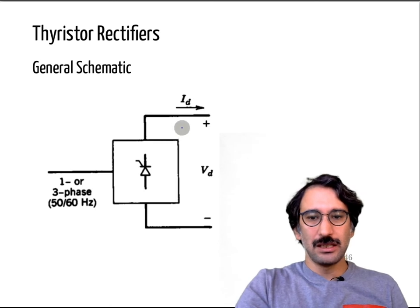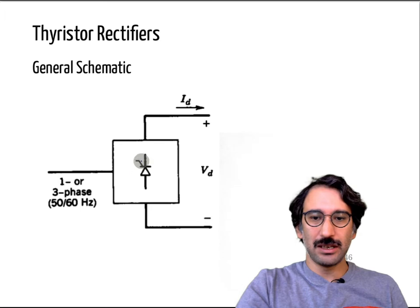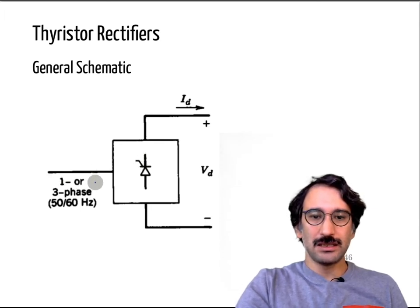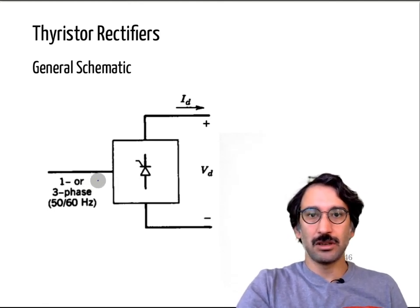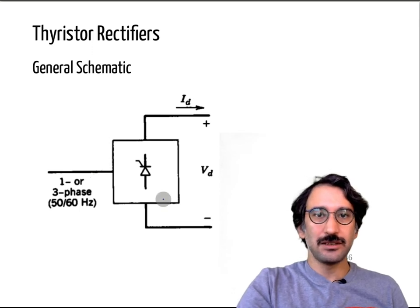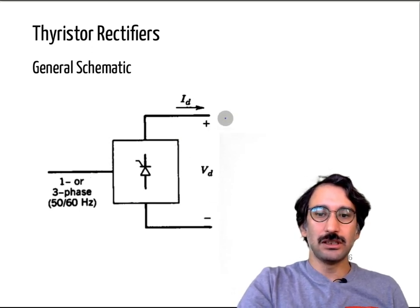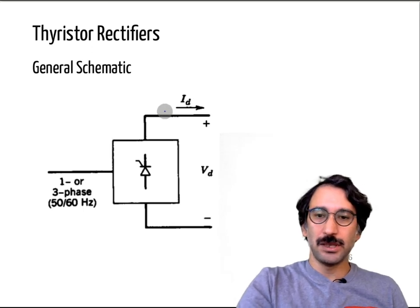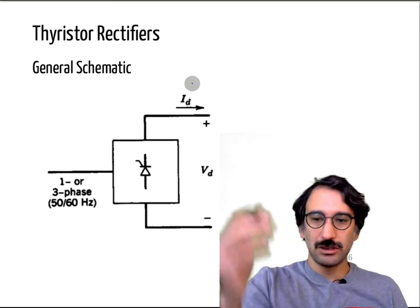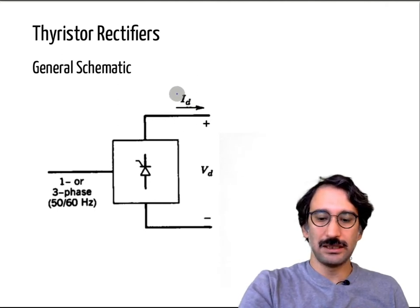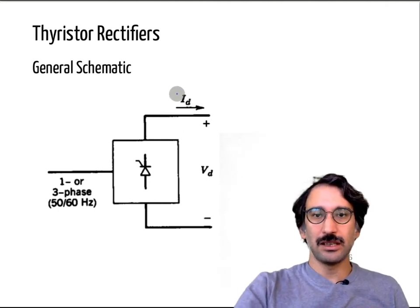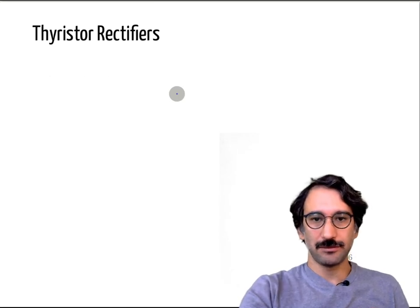The general schematic is like a diode rectifier, but instead of a diode we have a thyristor controlled by a gate signal. The input can be single-phase or three-phase or more. Today we will focus on single-phase thyristor rectifiers. The output is a DC voltage, though depending on the load, the voltage can vary or have harmonics. At the end of the day, it converts AC to DC.